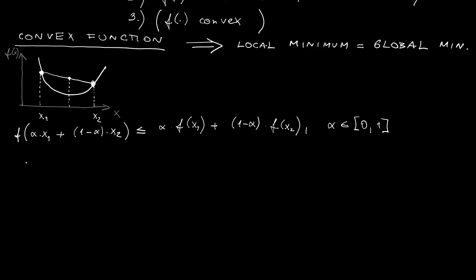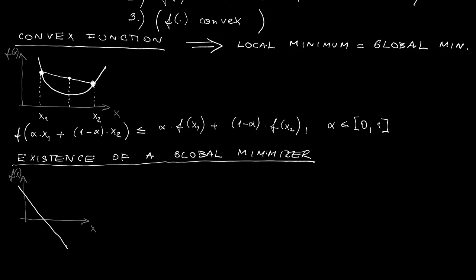Now, the question is whether the global minimum is actually guaranteed to exist for a given problem. For instance, have a look at the following function—just a real linear function. Obviously, here the minimum value is minus infinity. Or another situation: here there is some finite minimum value, however it's not achieved for any finite x. Therefore, we are asking a question under which conditions we are guaranteed to have a finite minimizer which achieves a finite value. And the answer is sketched in the figure here.